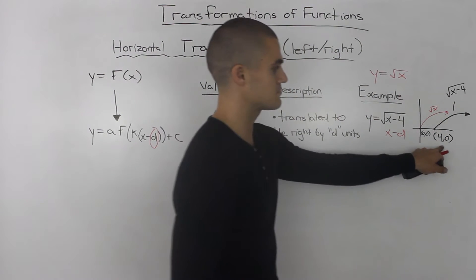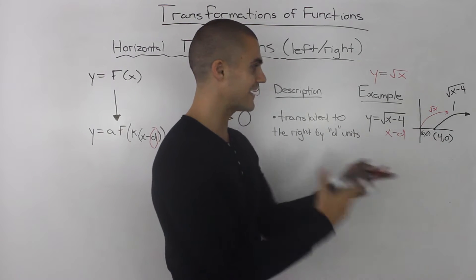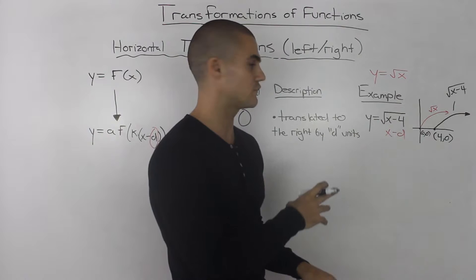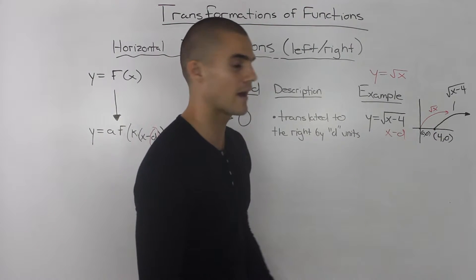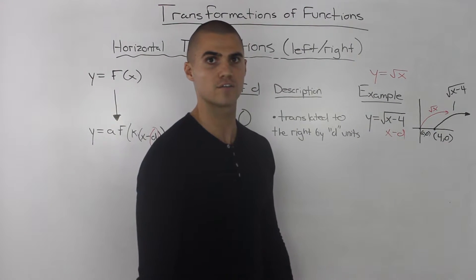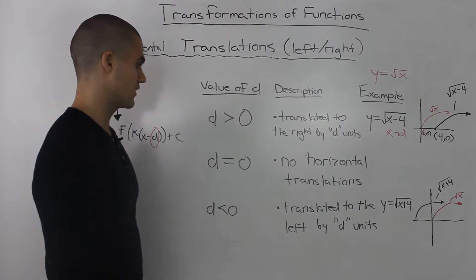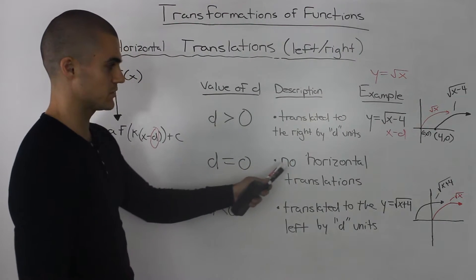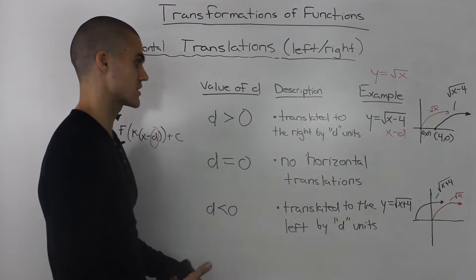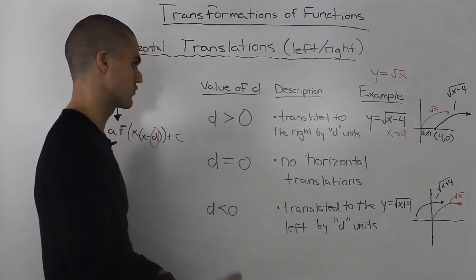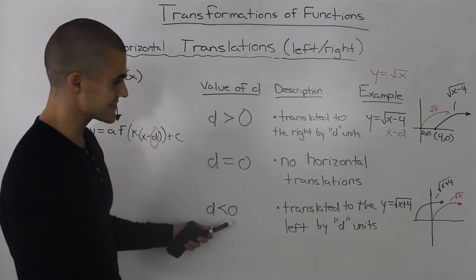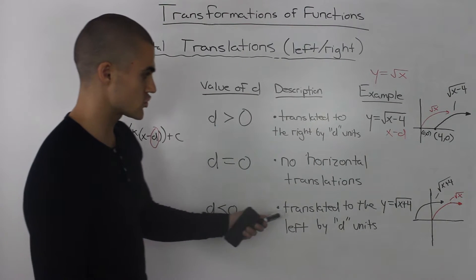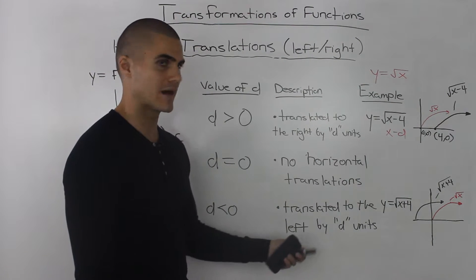That makes sense because any values less than 4, if we plug those in, we would get a negative value inside the square root, which would be undefined. For the final two cases: if d is equal to 0, that simply means there's no horizontal translation — it doesn't move left or right. If d is less than 0, then the function is translated to the left by d units.